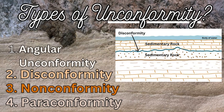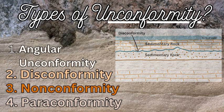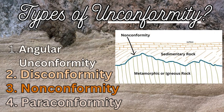Then we have a disconformity, which is an unconformity — a period of missing time of erosion or lack of deposition — between two sedimentary rock layers above and below. Then a nonconformity is where you have a difference in rock type: an igneous or metamorphic type below and a sedimentary rock above, with an unconformity — a period of weathering, erosion, and non-deposition — in between.